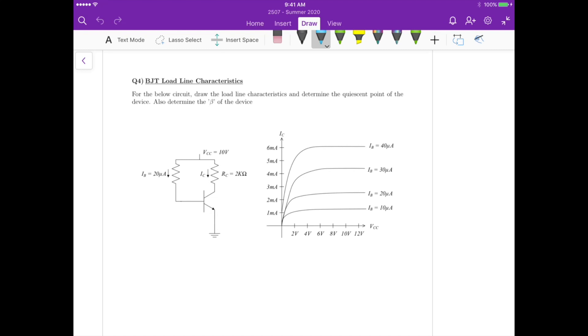Hi again, so this is question 4 or set 4. We have the BJT load line characteristics. For the circuit below, we need to draw the load line characteristics and determine the quiescent point of the device, and also calculate the value of beta.